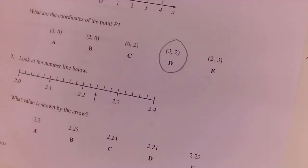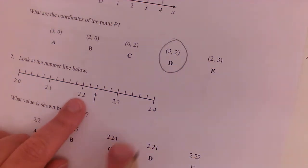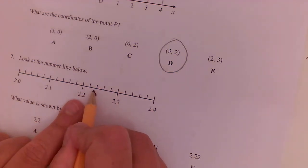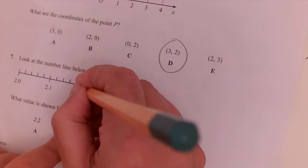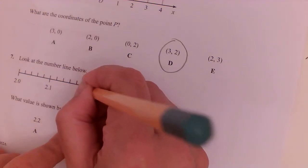Question seven. Look at the number line below. What is the value shown by the arrow? So it's somewhere between 2.2 and 2.3. And so as we can see, it's cut into one, two, three, four, five little sections there. So it's going up in point twos.